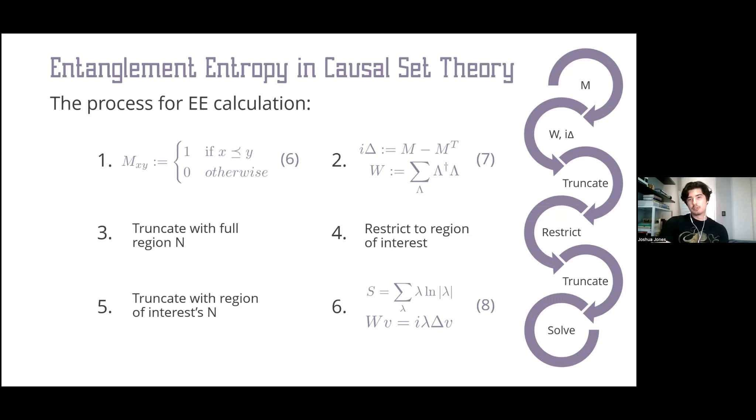Once we have the Pauli-Jordan and Wightman function, we do the truncation as previously detailed for the full regions element number. We then restrict the Wightman and Pauli-Jordan function and redo this truncation scheme with the sub-regions number of elements. Now we have them in a form ready to be used in the eigenvalue problem to calculate the entanglement entropy.